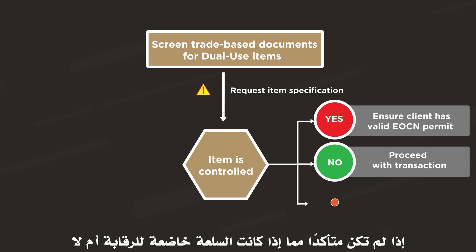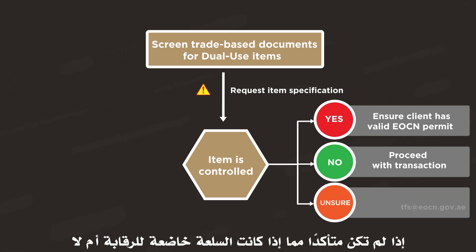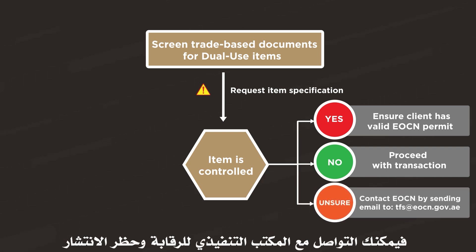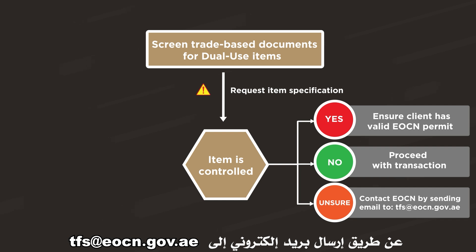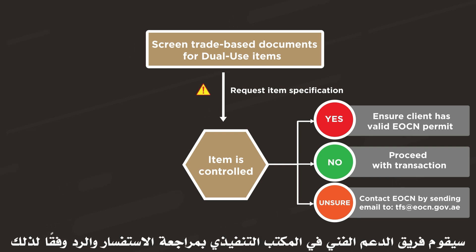If you are unsure whether the item is controlled or not, you may contact the EOCN by sending an email to tfs@eocn.gov.ae. The EOCN technical support team will review your query and respond accordingly.